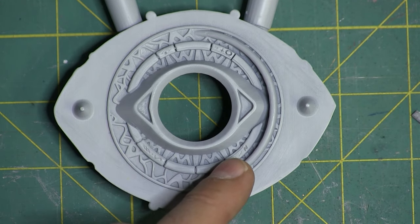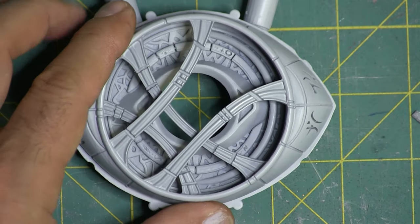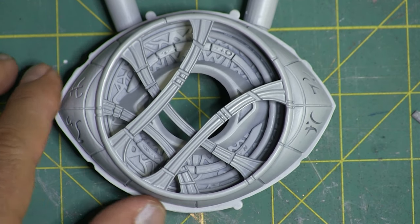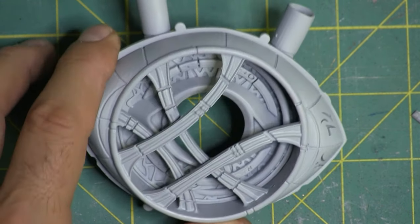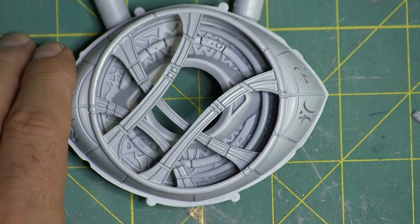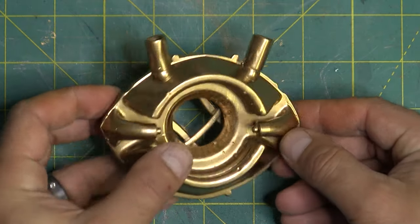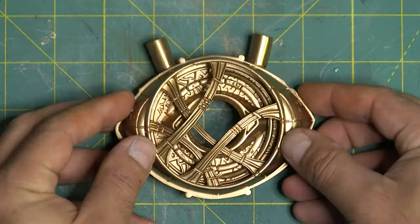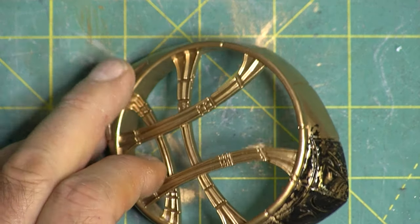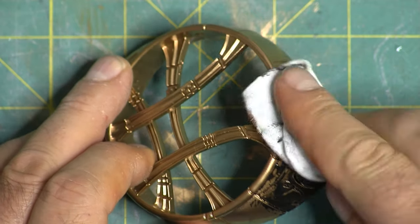I do use the Tamiya Fine Primer. The link's below for that. I love this stuff. It doesn't get cloggy, it doesn't get rid of detail. And then I hit it with some gold. Now, this is way too gold. This is just cheap gold spray paint I got at Lowe's. And now it's time for the fun part to weather this guy up.